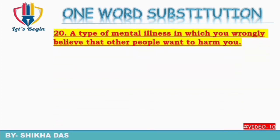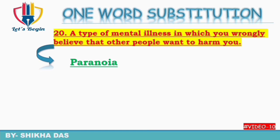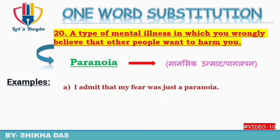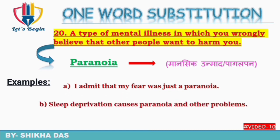Question number 20: a type of mental illness in which you wrongly believe that other people want to harm you — aisi mental illness jisme aapko lagta hai ki doosre sirf aapko hurt karna chahte hain. Isko kaha jata hai 'paranoia'. Paranoia ko Hindi mein kehte hain 'mansik unmaad' ya 'paagalpan'. Examples: 'I admit that my fear was just a paranoia.' 'Sleep deprivation causes paranoia and other problems.'